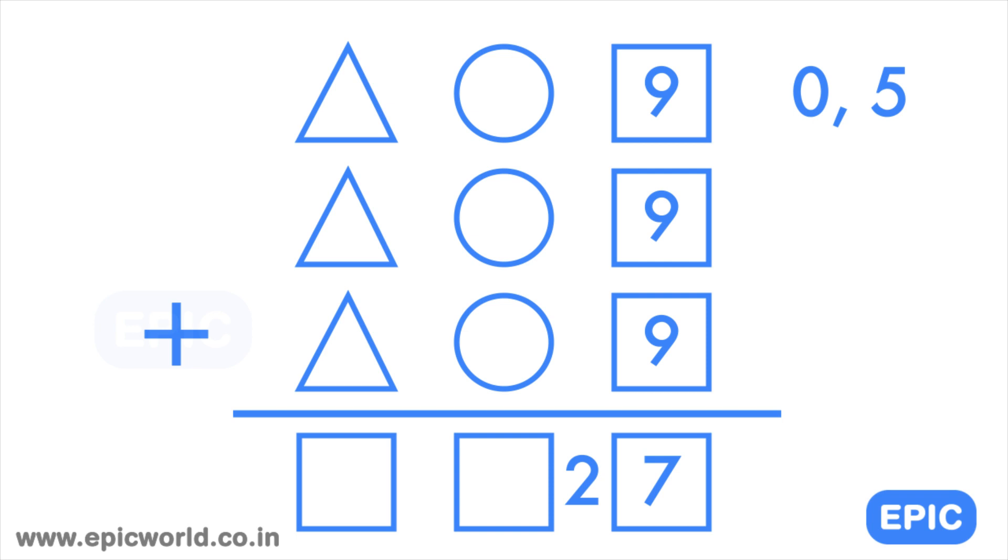Hence only zero and five are the possible values for the square. But if we take the value zero then the total sum will be zero zero zero. This means that the triangle and the circle are zero too. Now, we know that triangle circle and square all have different values so zero for square is not a possible solution.